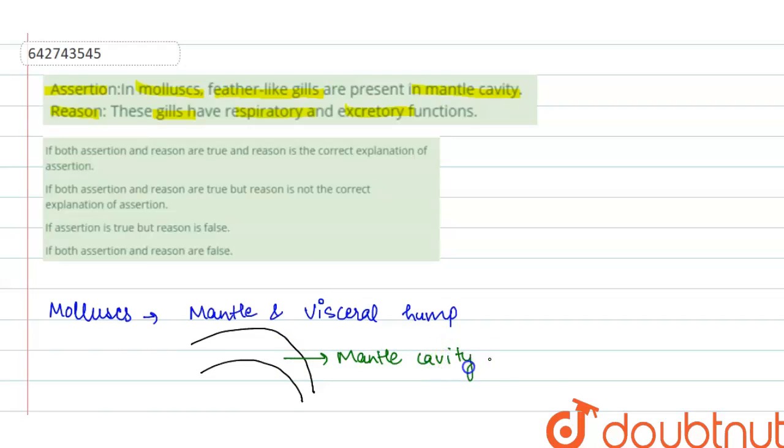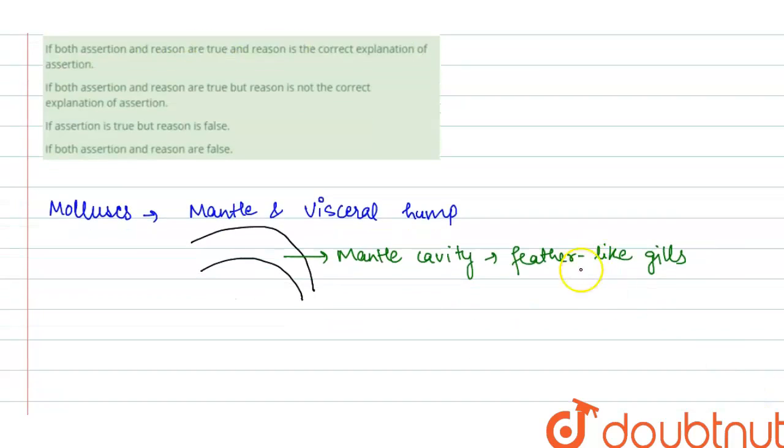And in this mantle cavity, there are present feather-like gills, which are in the shape of a feather. These feather-like gills perform their role in respiration and excretion.